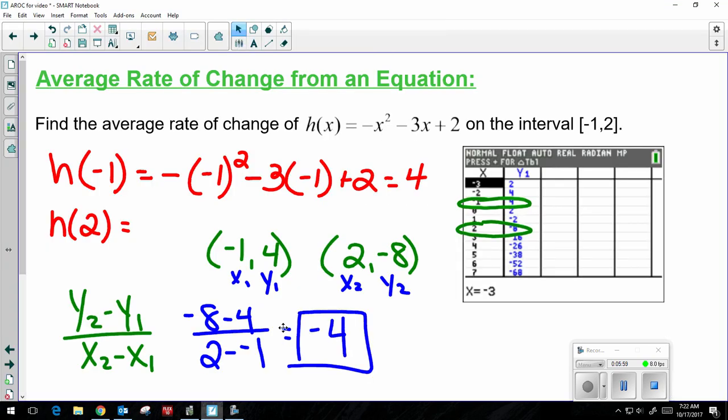So remember, average rate of change is really just slope. It only has a different name because we're not always dealing with lines. So we're using that slope formula: y2 minus y1 over x2 minus x1.